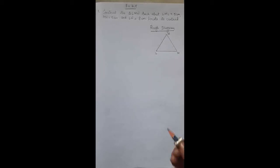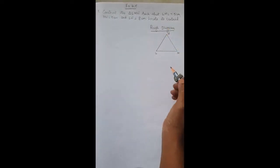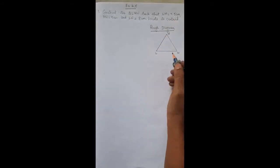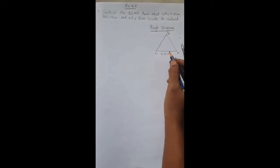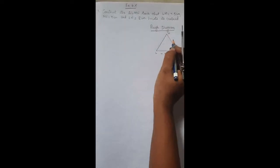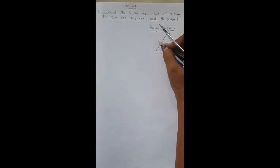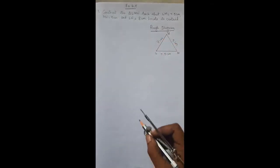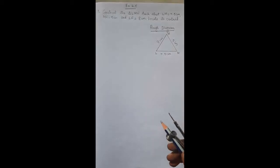First we need to draw the rough diagram of triangle LMN and mark the given measurements: LM is 7.5 cm, MN is 5 cm, and LN is 8 cm. First we need to construct the triangle, and then we have to construct the centroid.